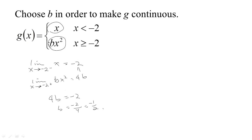Then the limit will exist. So if we choose b to be negative one half, the limit as x tends to negative 2 will be negative one half times 4, which is negative 2 — and this actually matches the value of the function at negative 2. So the choice is to make b be negative one half, and then we get a continuous function.